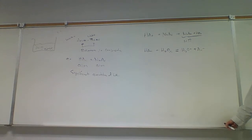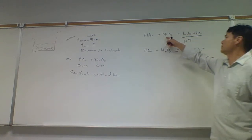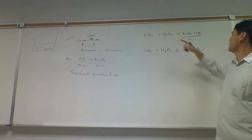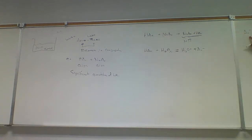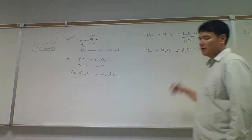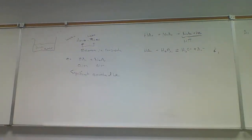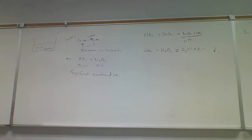We also have to worry about the base, and KW as well. The base is sodium acetate — a strong electrolyte — so that breaks up into sodium ions and acetate ions. Actually, the base is acetate ions. The acetate will hydrolyze water to form acetic acid and hydroxide. This would be KB. So it looks like we'd have to do the Ka for acetic acid, followed by the KB for acetate, and then KW. But when you look at the Ka and KB, what do you notice about those?